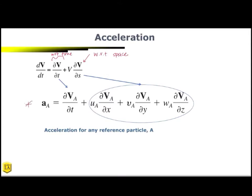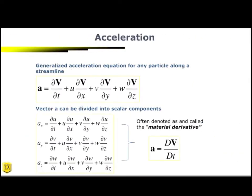So as you expand this for reference particle A, this beginning part here is just, again, the partial differential with respect to time, and each of these are considering the partial differentials with respect to the X, the Y, and the Z. This actually extends out a little bit further if we want to determine the acceleration field in the X, Y, and Z direction. So the first equation here is the generalized acceleration equation for any particle along a streamline. But this is still in the vector form.